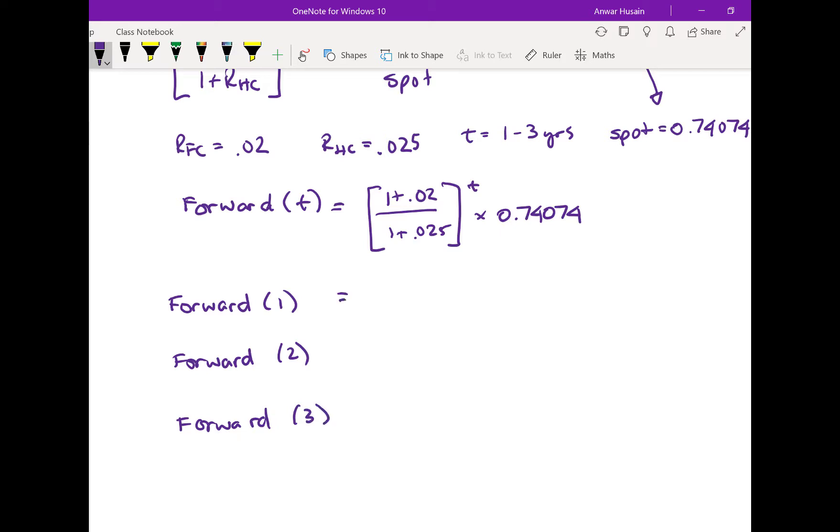Okay, it's going to be the same formula, so 1.02 over 1.025, in this case to the power of one, times the spot rate of 0.74074.